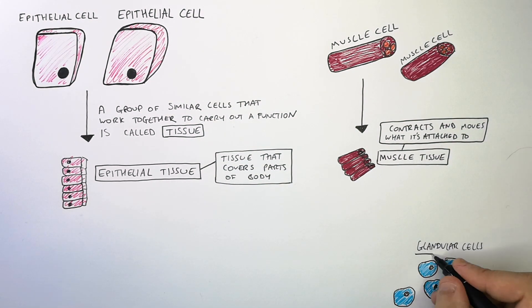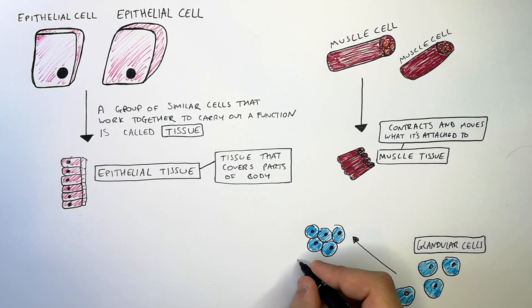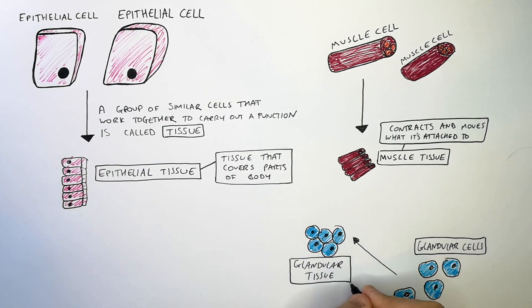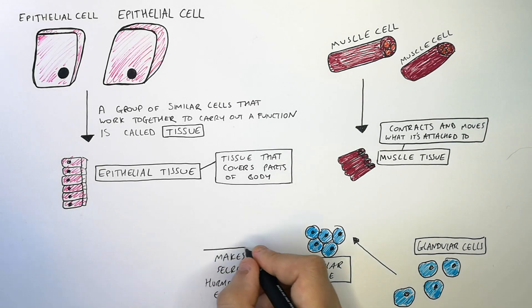These are glandular cells. When glandular cells form a collection they form glandular tissue which has a function. Glandular tissue makes and secretes hormones and enzymes.